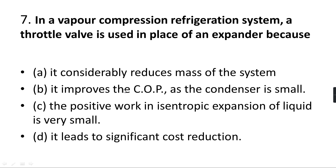Next, in a vapor compression system, a throttle valve is used in place of the expander. The expansion device after the condenser can be a throttle valve, capillary tube, or different type of expander. The question asks: what is the advantage of using a throttle valve in place of the expander? Options include: it considerably reduces the mass of the system, it improves the COP, the condenser is small, or the positive work in isentropic expansion of liquid is very small.